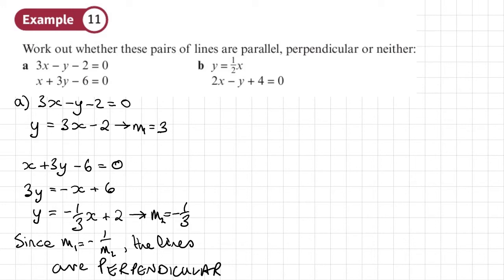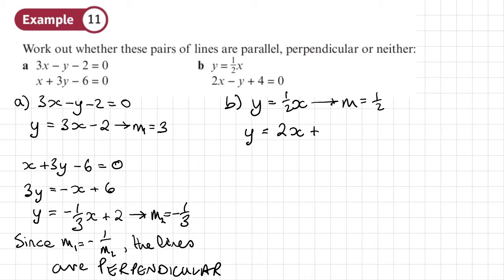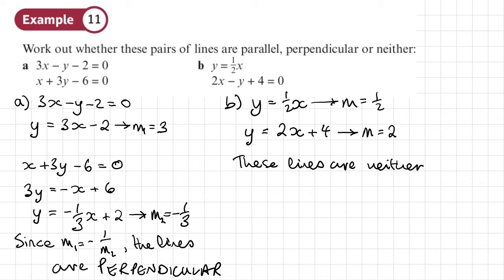Now for the second part. From the first line, no rearranging required — I can see that m is a half. From the second line, rearranging gives y equals 2x plus 4, so the gradient is equal to 2. If this were negative 2, or the first were negative 1 half, they would be perpendicular. Or if they were the same, they'd be parallel. So in fact, these lines are neither perpendicular nor parallel.